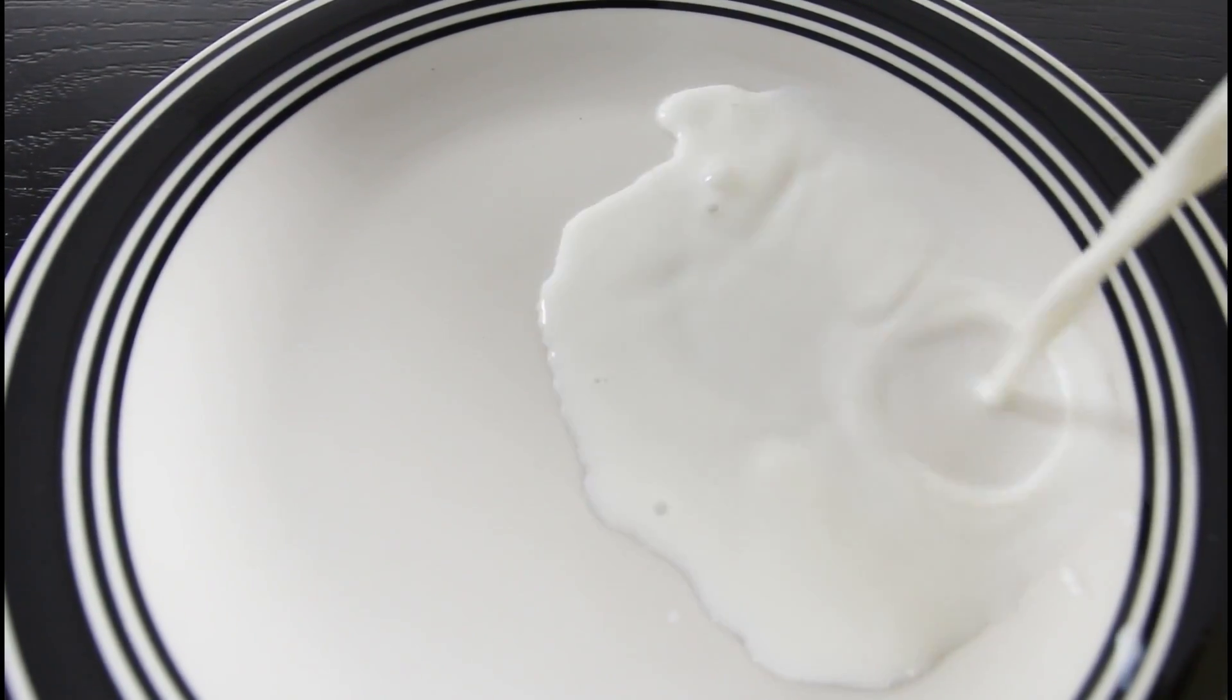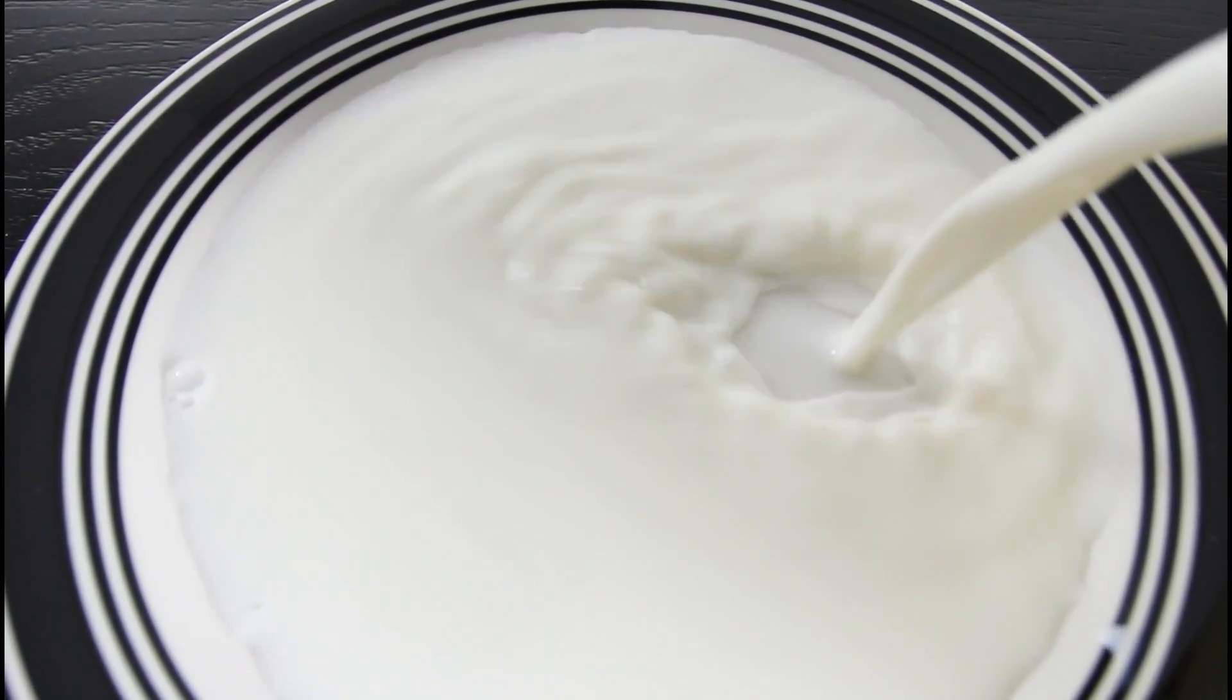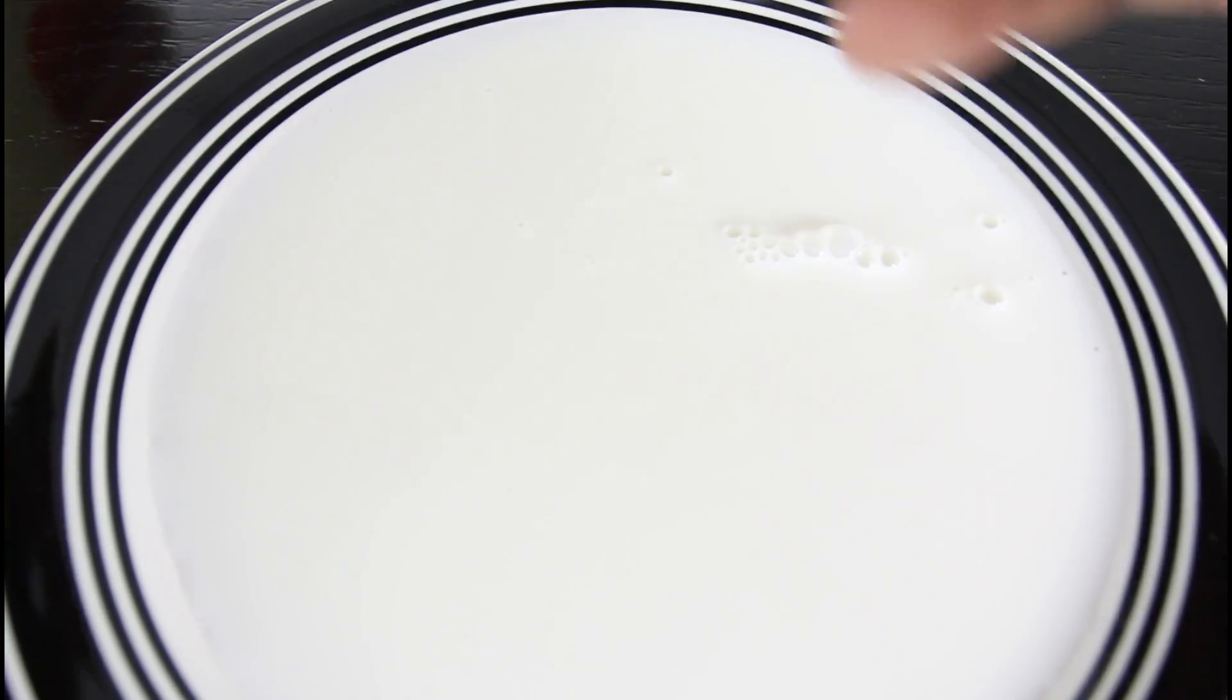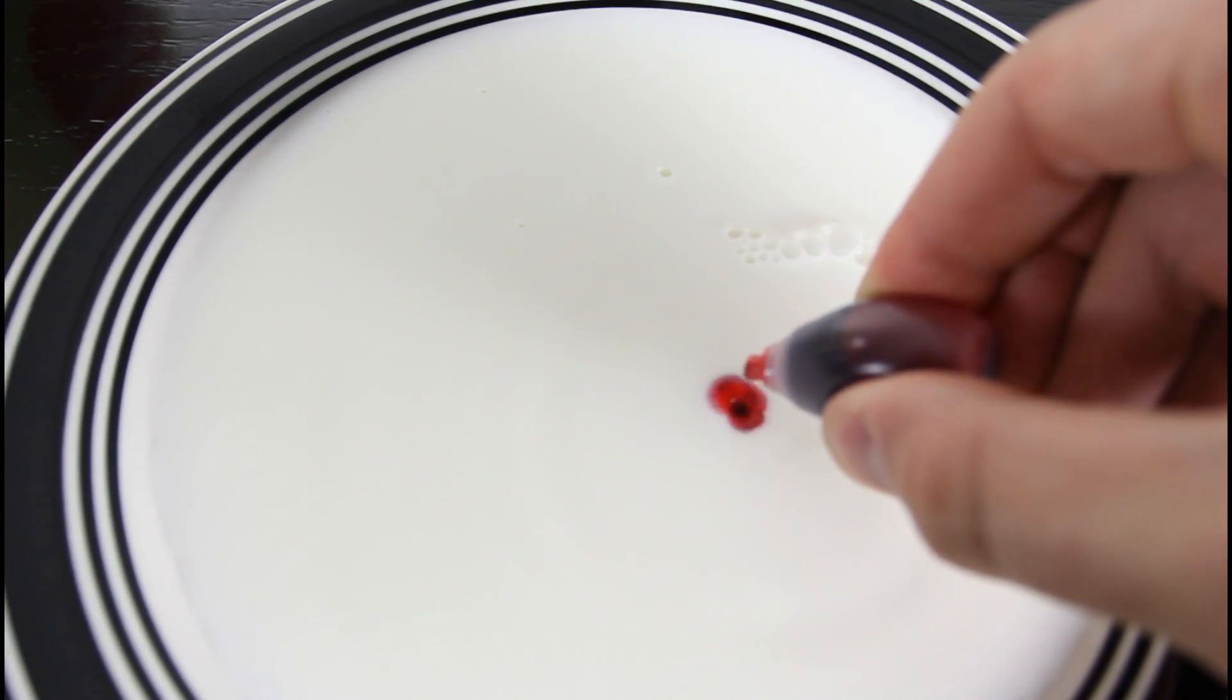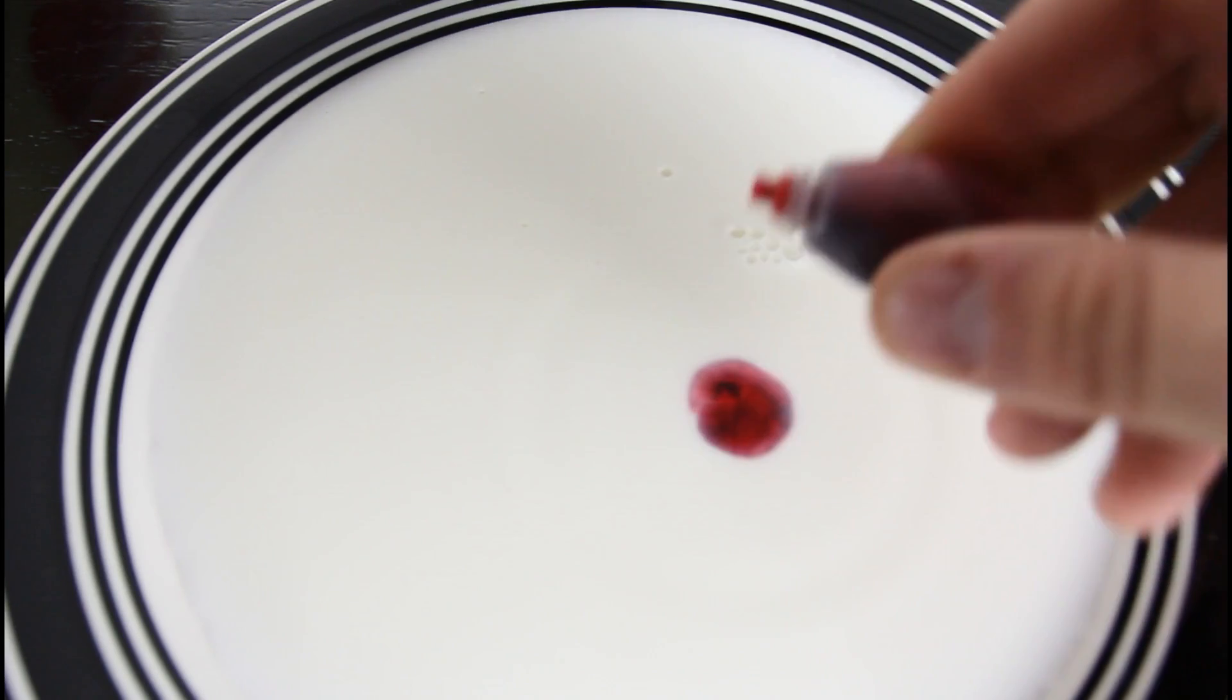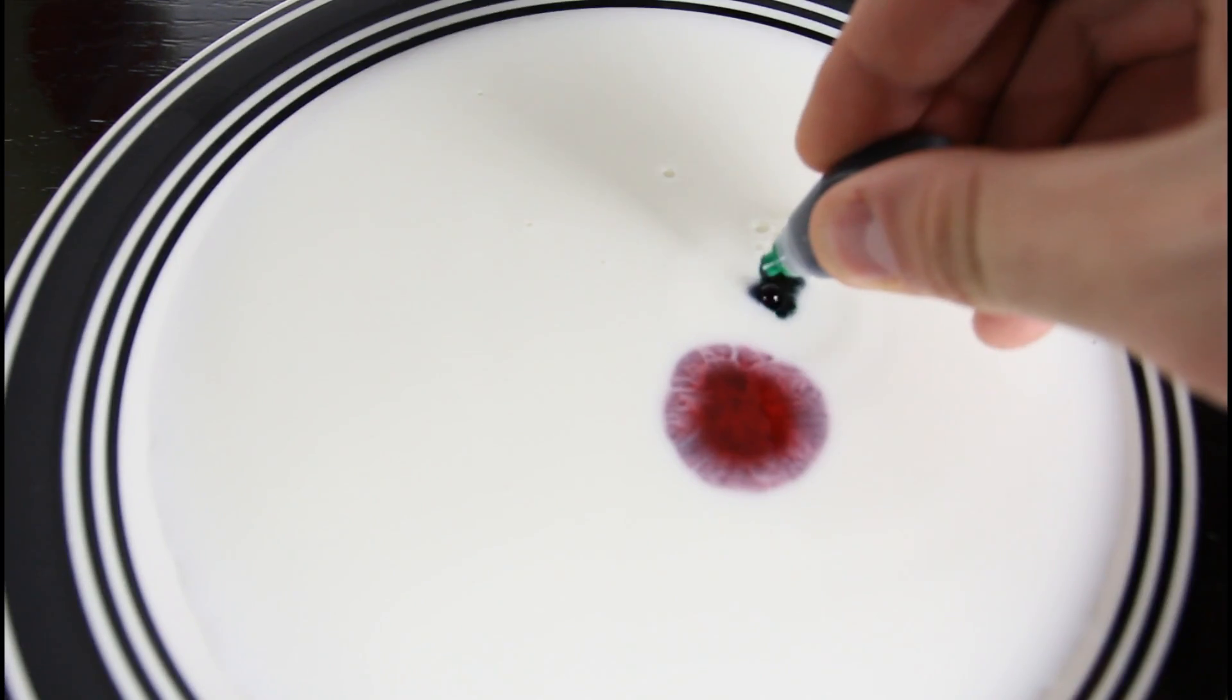We're gonna pour milk first, you know, in a plate. Then we're gonna make couple drops of food coloring, of red, green right here.